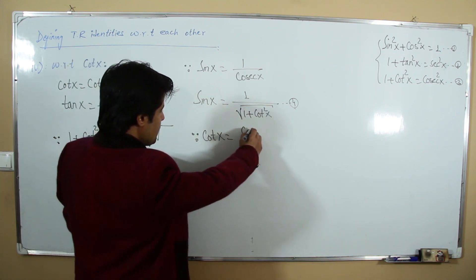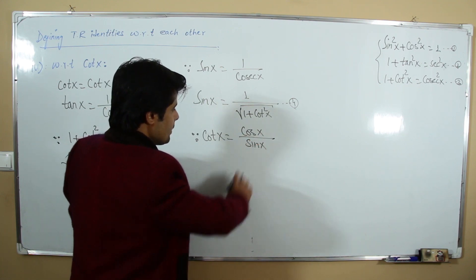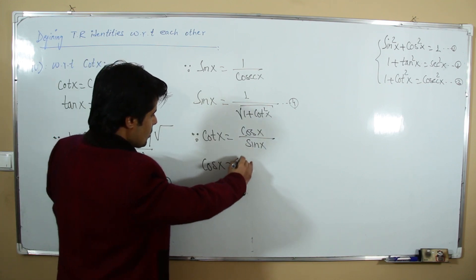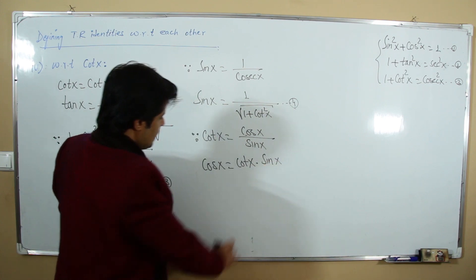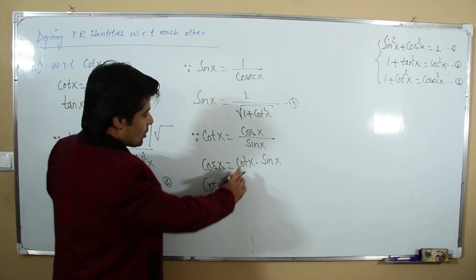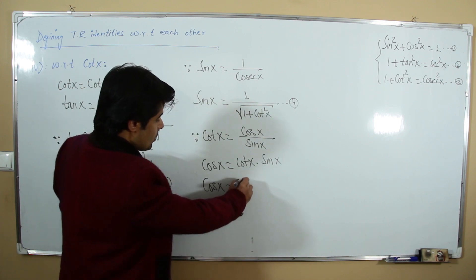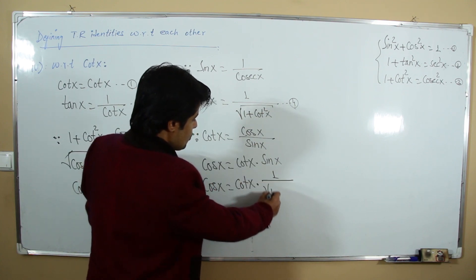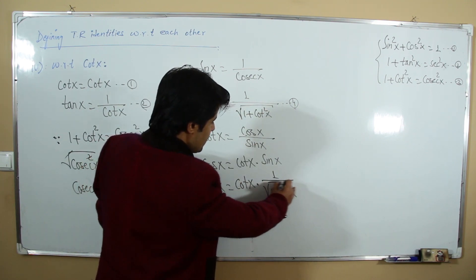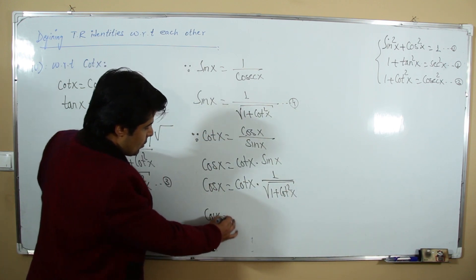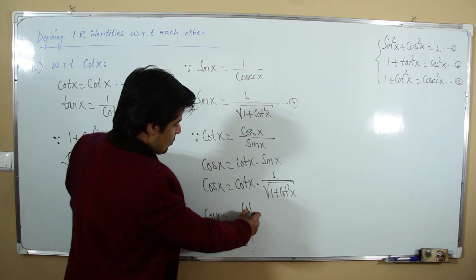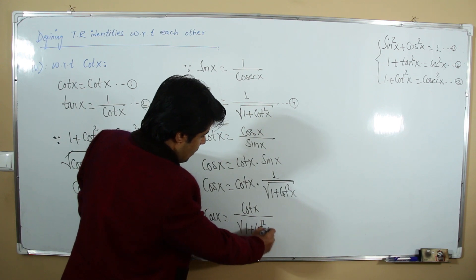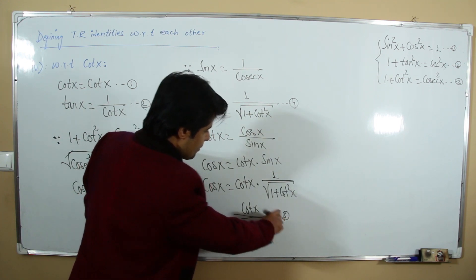From the definition cot x = cos x / sin x, by cross-multiplication: cos x = cot x · sin x. Substituting sin x = 1/√(1 + cot²x): cos x = cot x / √(1 + cot²x). This is our fifth relation.